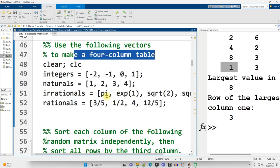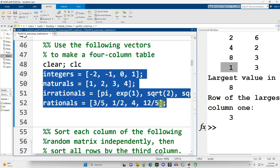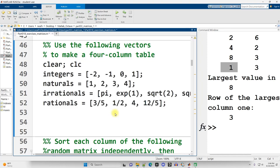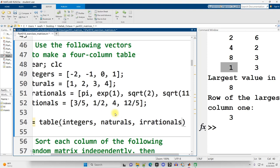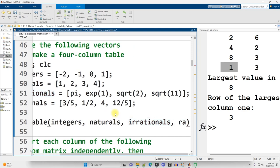All right. So the largest value is the number eight. There it is right there. And it is in the third row. And that is accurate. Use the following vectors to make a four-column table. So I'm going to put these into a four-column table. So this is just a review of how to create tables. Name some variable.